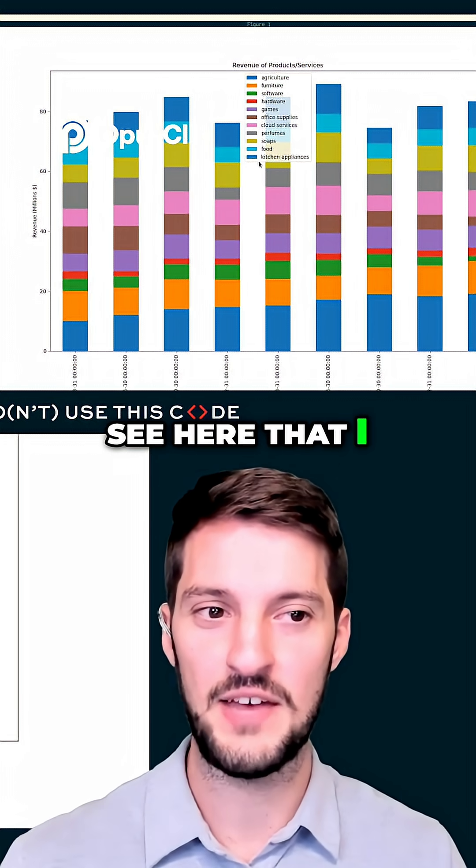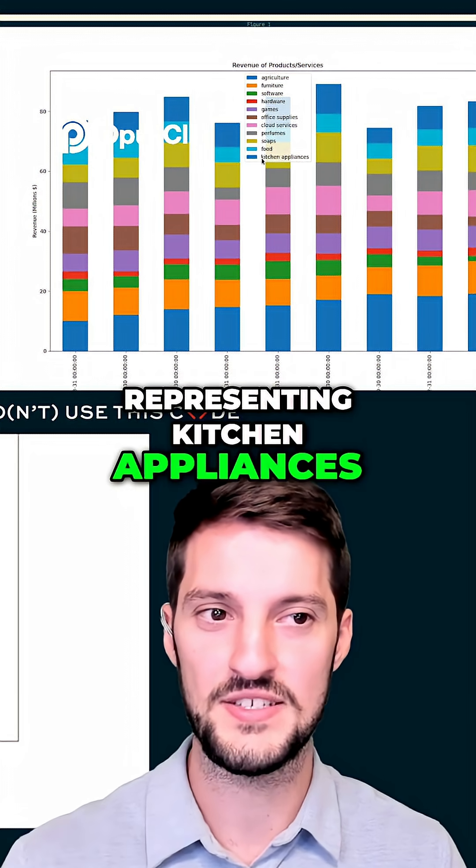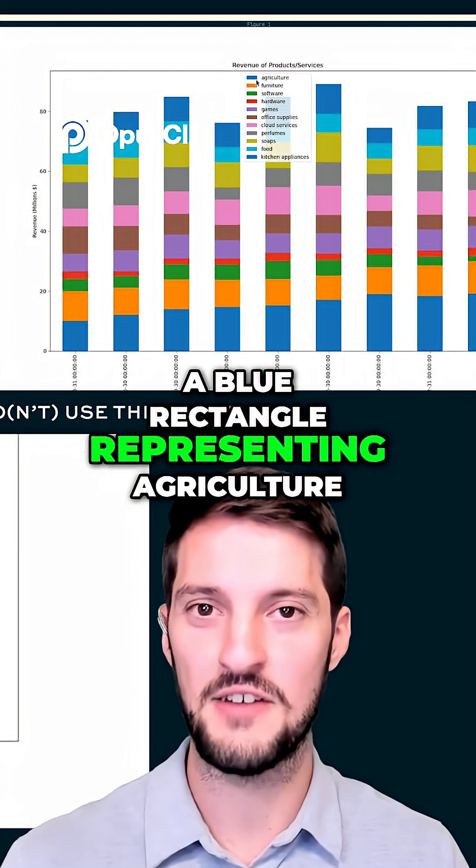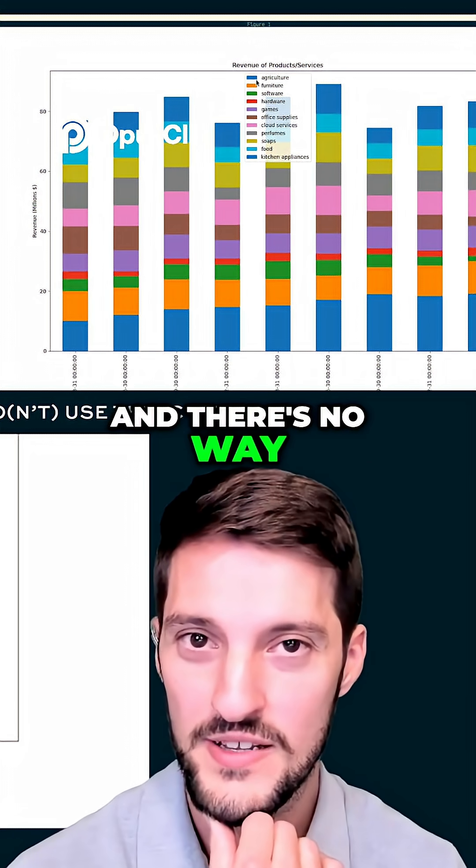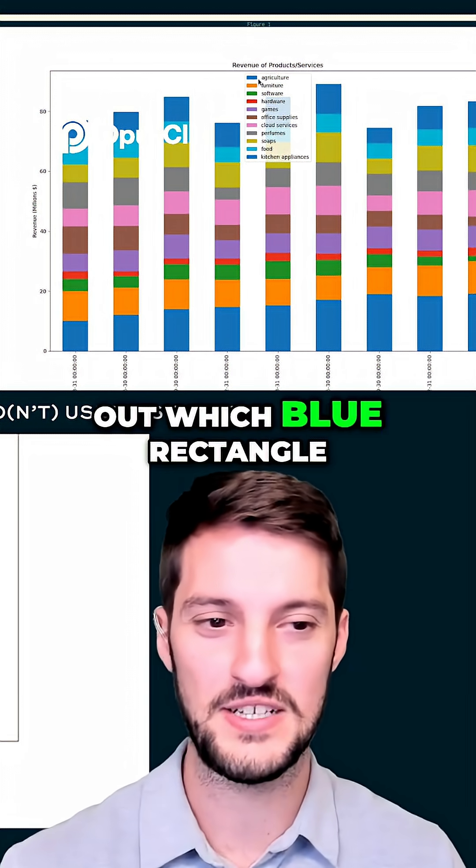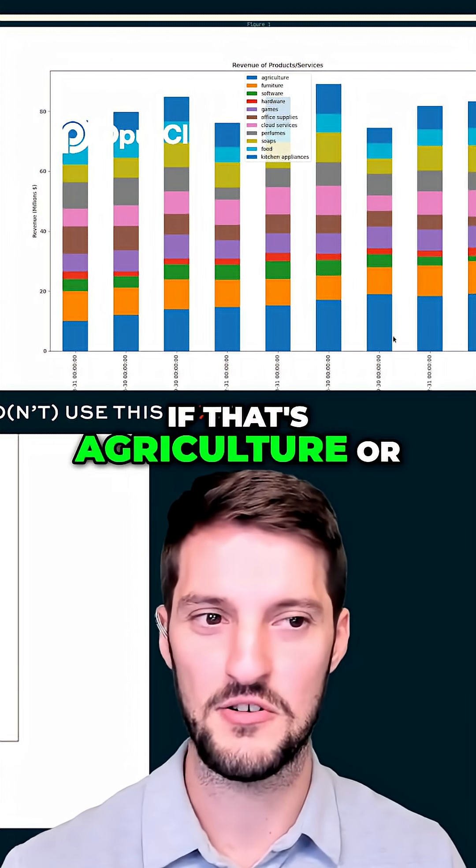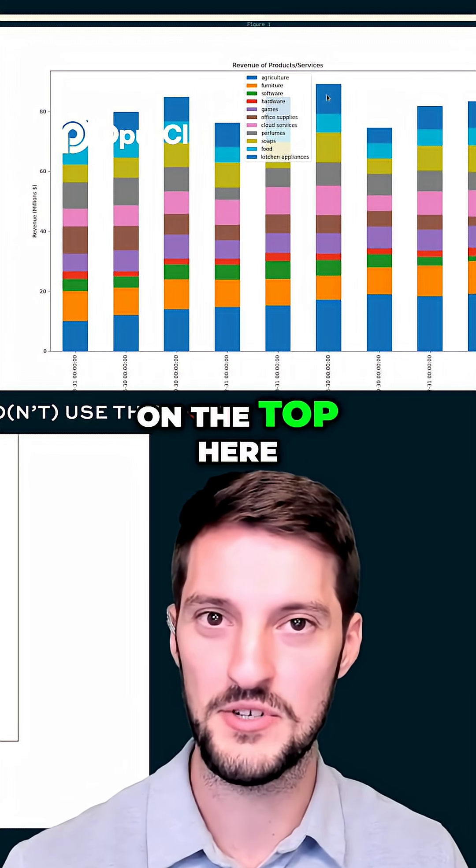You can see here that I have a blue rectangle representing kitchen appliances, but also have a blue rectangle representing agriculture. There's no way to figure out which blue rectangle is on the bottom - if that's agriculture or kitchen appliances - versus which blue is on the top.